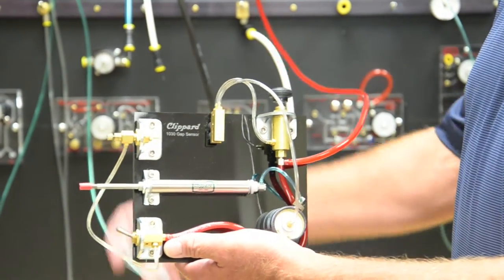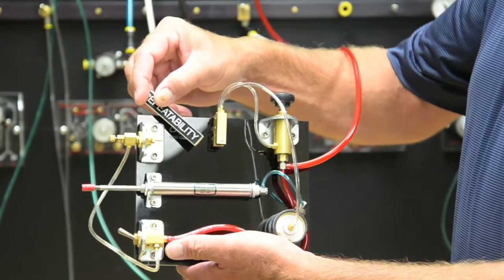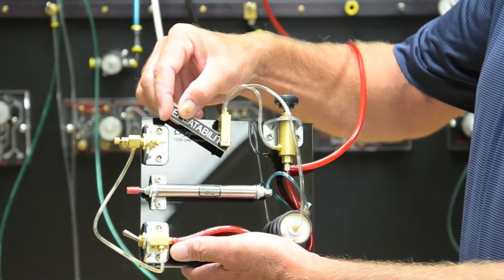When we put something in the way of the gap, that is when we cancel the output on the low pressure control valve.